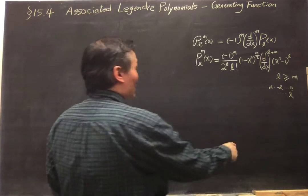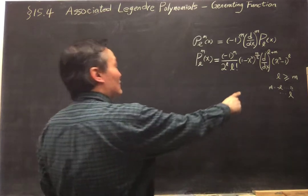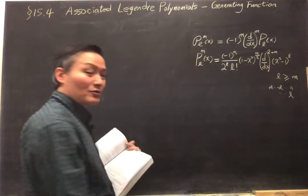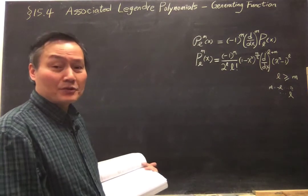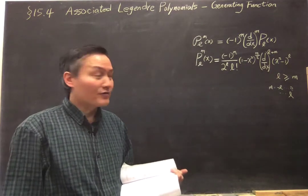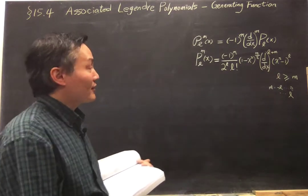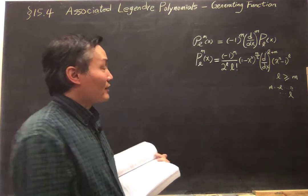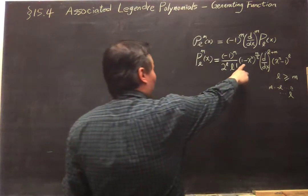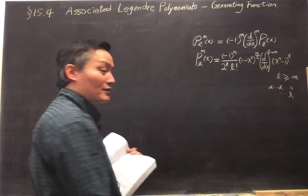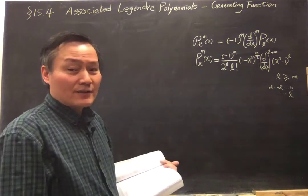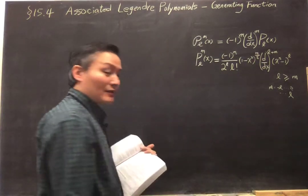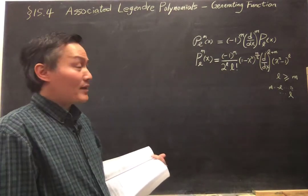Also, we already mentioned that with the substitution x equals cos θ, the factor (1 minus x squared) to the 1/2 power is just sin θ. So this factor (1 minus x squared) to the m/2 is basically sin θ to the m power.